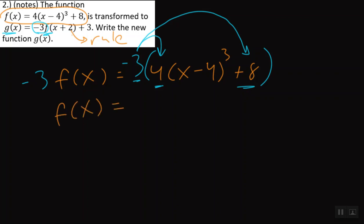So this implies that our new function will actually be negative 3 times 4, which is negative 12, and then we have our parentheses (x minus 4), I'm even going to leave a space now, cubed, and then we have the negative 3 times 8, which will give us negative 24.